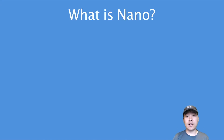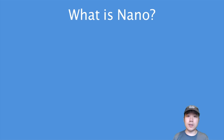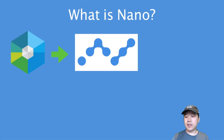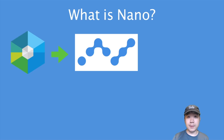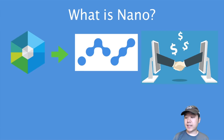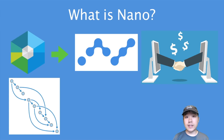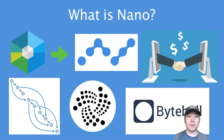So what is Nano on a high level? Well, it is a cryptocurrency — emphasis on the currency part — focused on peer-to-peer transactions. It was formerly known as RaiBlocks, launched in 2015 with the ticker XRB, and then rebranded on January 31st, 2018 as Nano. It is designed for speed, scalability, efficiency, and zero fees, and it is a directed acyclic graph, or DAG, kind of similar to IOTA or Byteball.